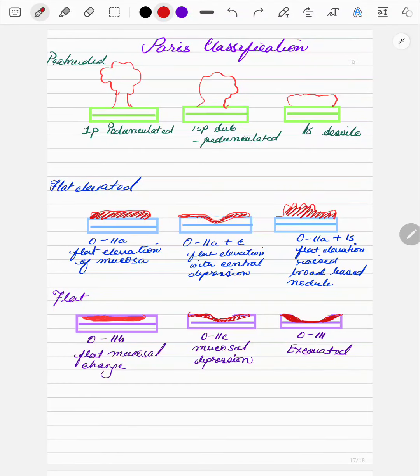The Paris classification is also an endoscopic classification of polyp. So it classifies the polyps into protruded, flat elevated and flat lesion.